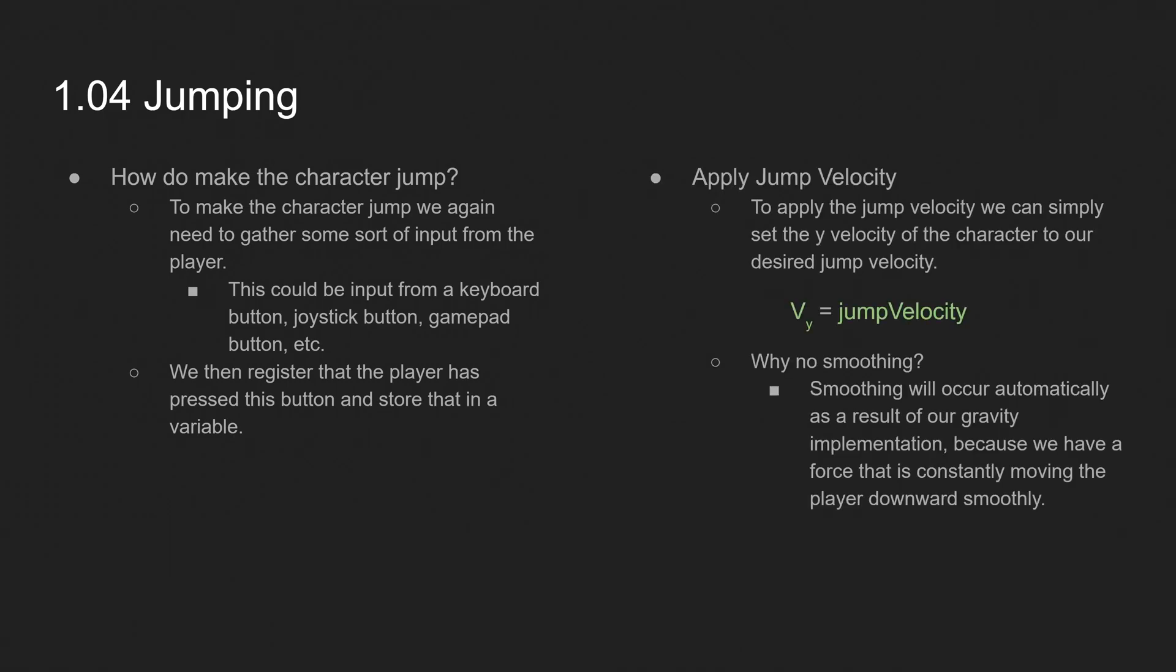So to apply the jump, we simply apply a jump velocity. We just set the y velocity to whatever we want our jump velocity to be. And it might seem strange that it's so simple. We're just saying velocity_y equals jump velocity. Why aren't we doing anything else? Why no smoothing? Well, smoothing will occur automatically as a result of our gravity implementation. Because we have a force that is constantly moving the player downwards smoothly, we don't have to worry about moving him up smoothly.